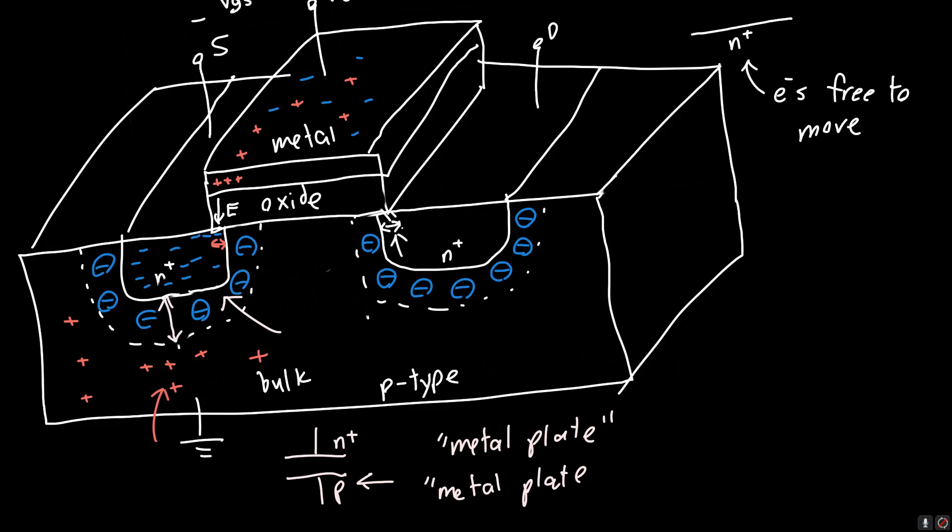So here, this parallel plate capacitor between this N plus and this P region, this is an N plus metal plate. So our metal plate is actually an N plus region. But similarly, that doesn't matter. There's free charges that can move around. And this is a P-type plate. So this is also a metal plate. And so you can think of this as a region in which no mobile charges exist, or free space, or some dielectric. So you can think of this just as a parallel plate capacitor. And same over here. Same between the drain and the body. So those are all the major capacitances of the MOSFET. But there's one more.